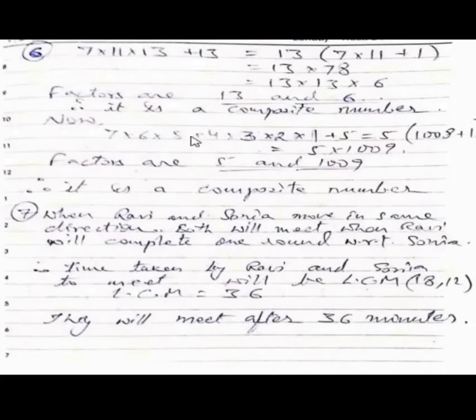Now, 7 into 6 into 5 into 4 into 3 into 2 into 1 plus 5. Taking 5 as common, we get 1008 plus 1, so 5 into 1009. Factors are 5 and 1009. Therefore, it is a composite number.